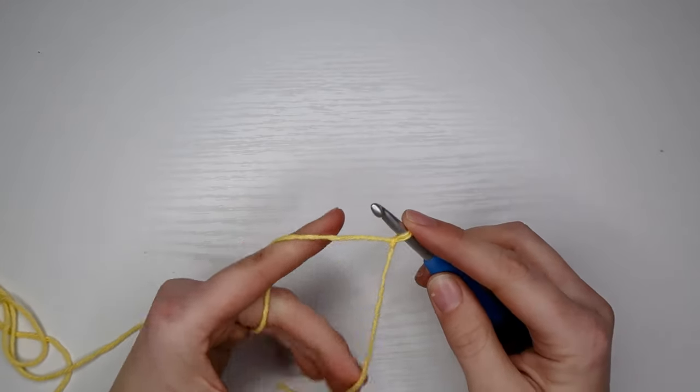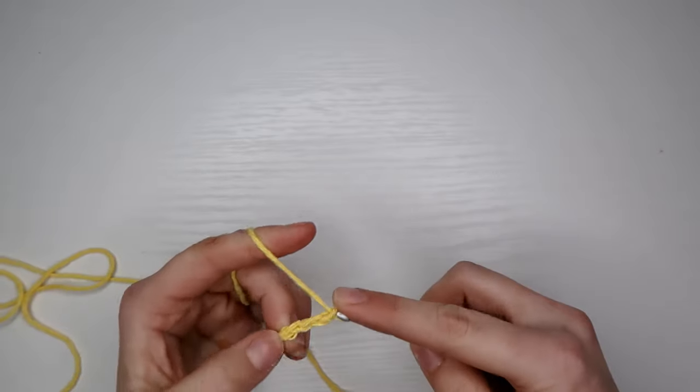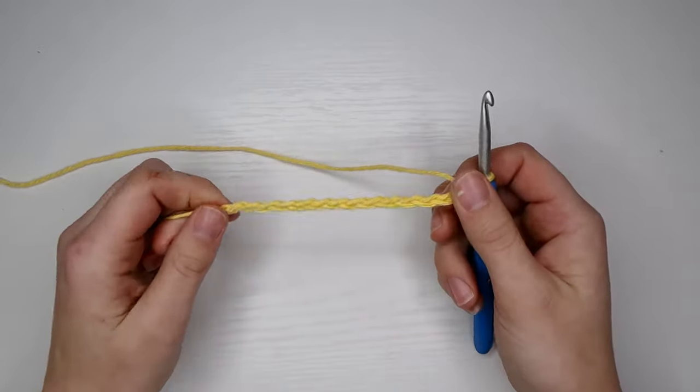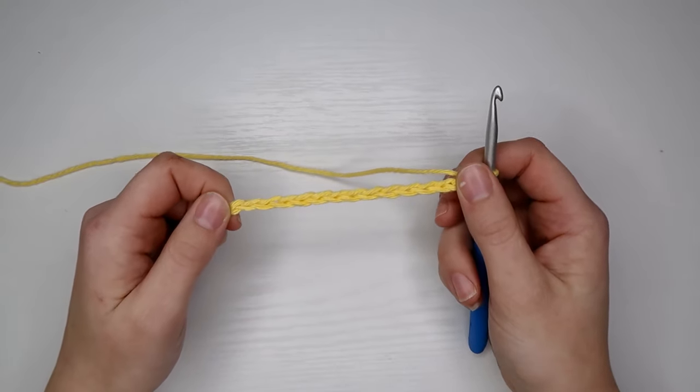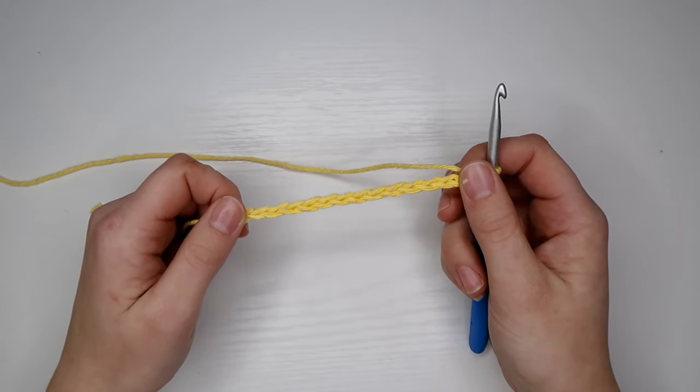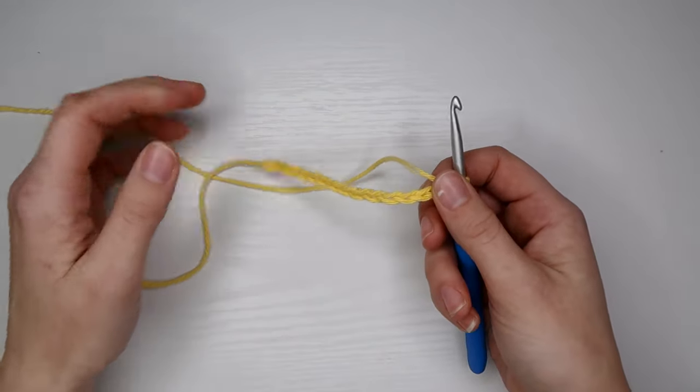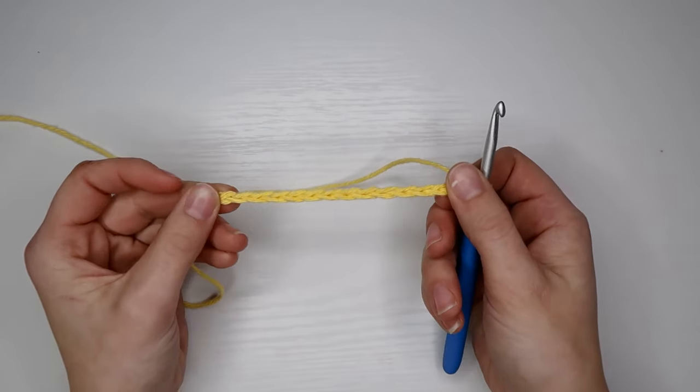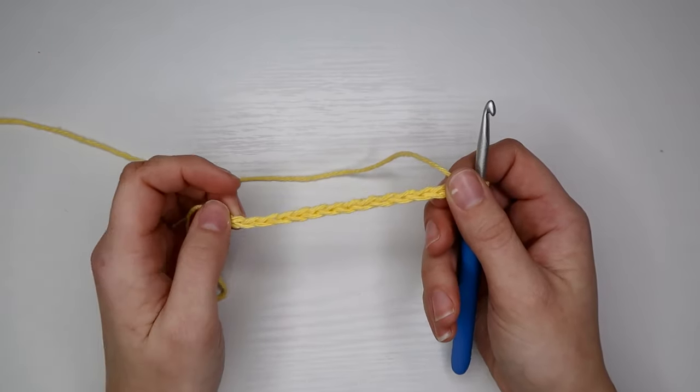After we get our slip stitch, the first thing I'm going to do is chain 14. The reason that I chained 14 is because I am making a C cup today. Normally what I would do is 10 chains for an A, 12 chains for a B, 14 for a C, and so on, adding two every cup size you go. But if you want your overall cup to be longer, you just need to make your base chain longer. Those are just the measurements that I do.